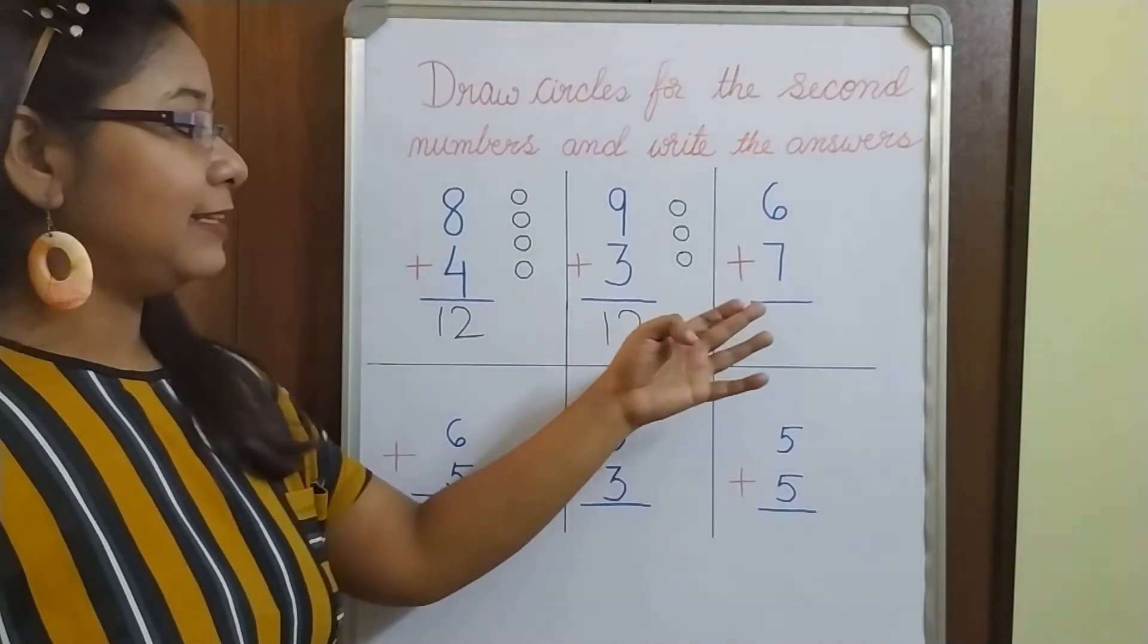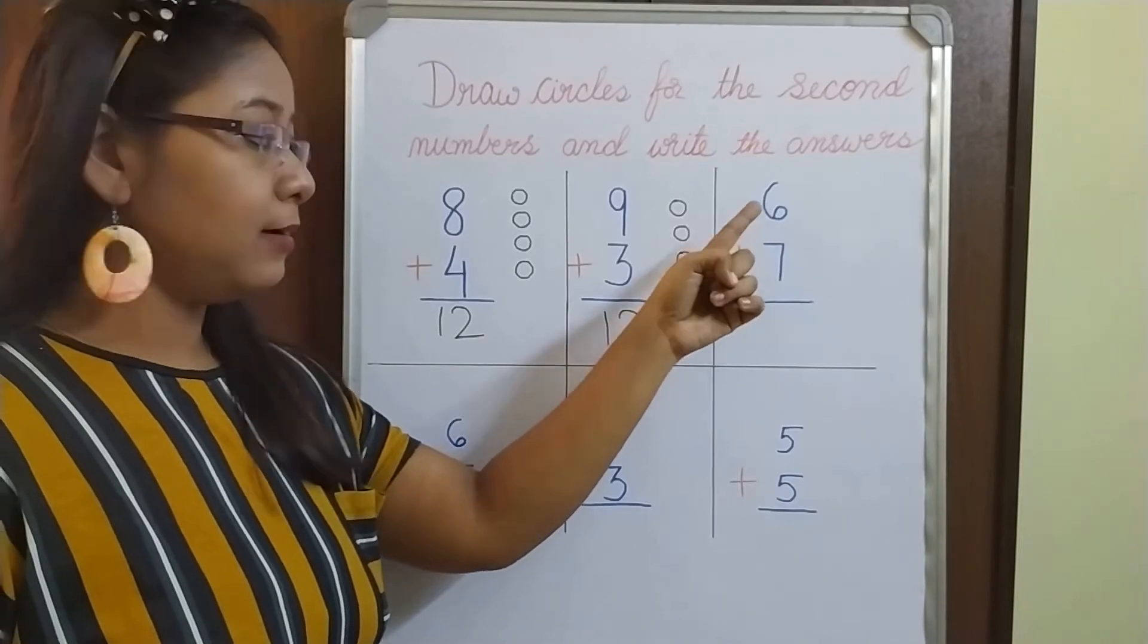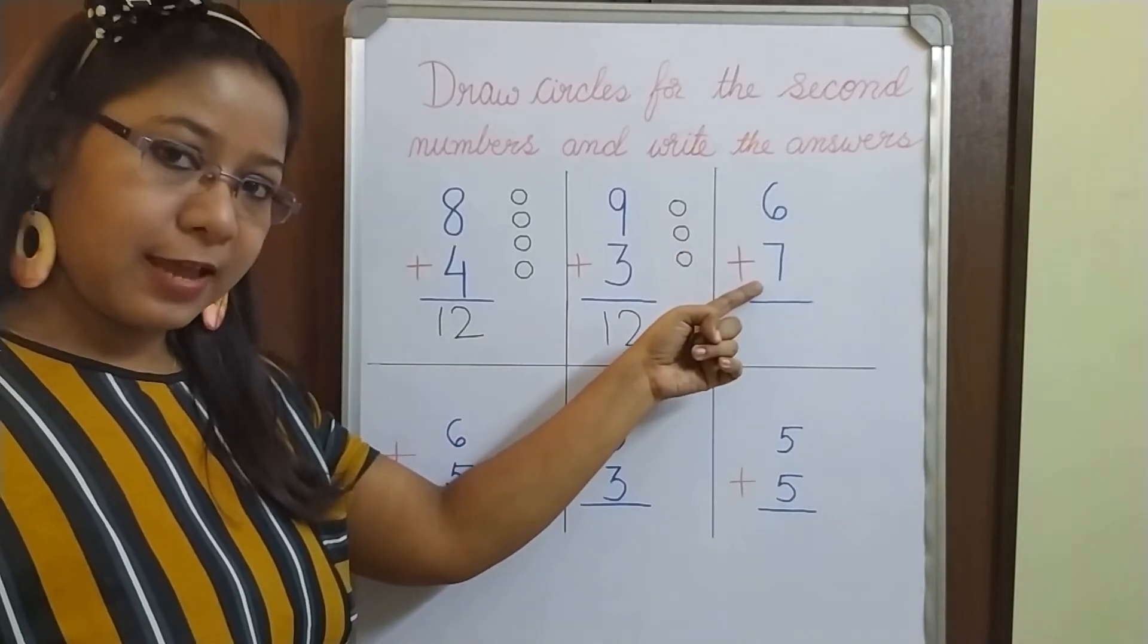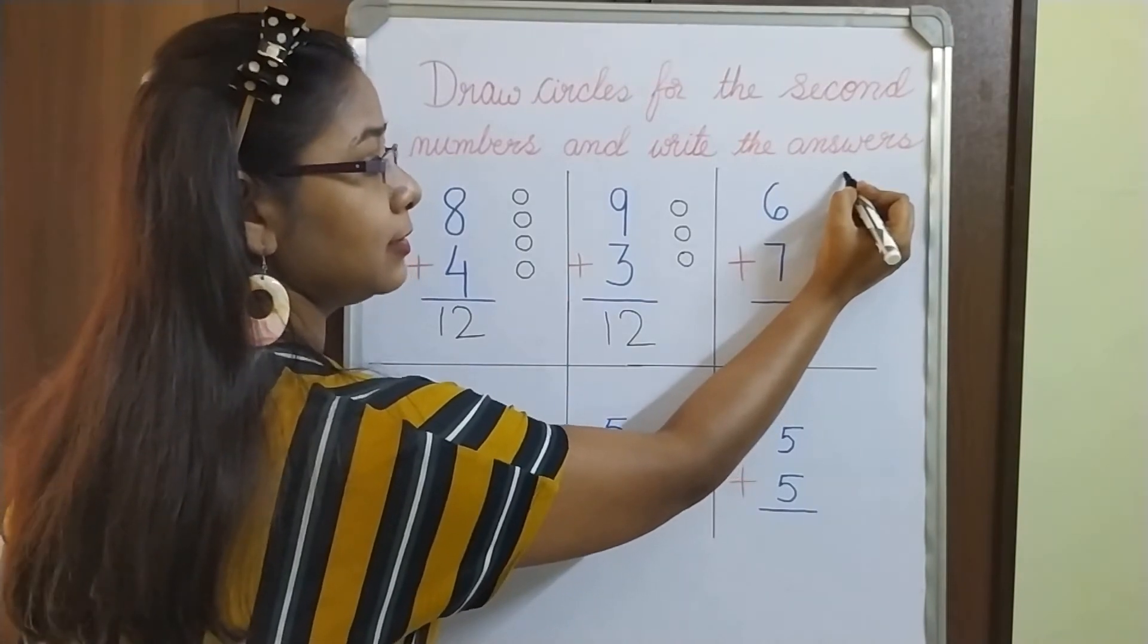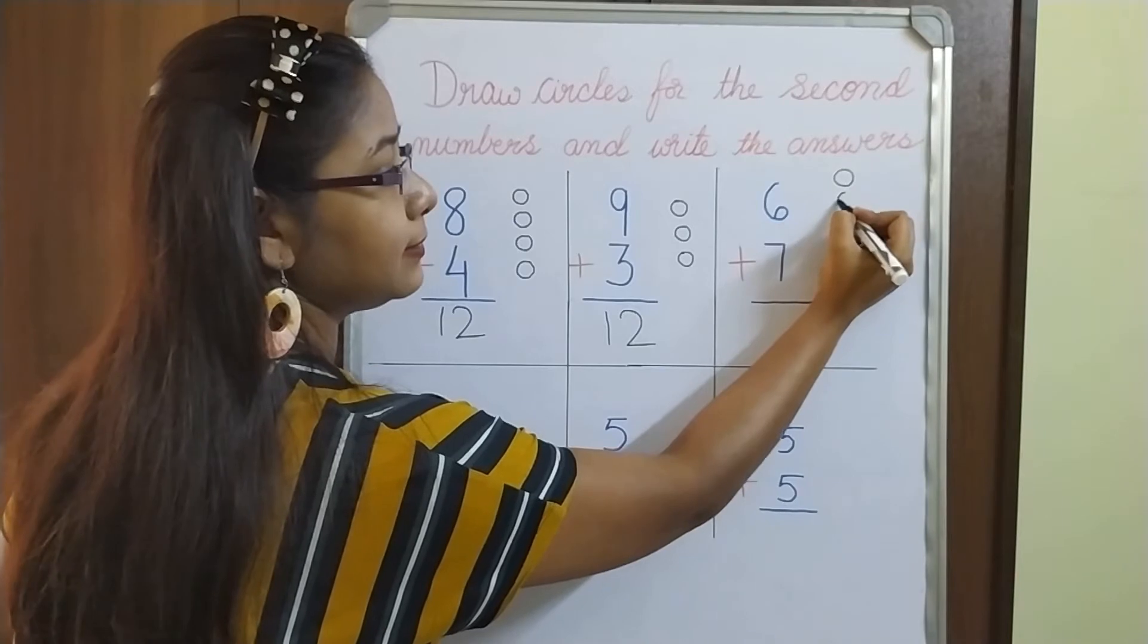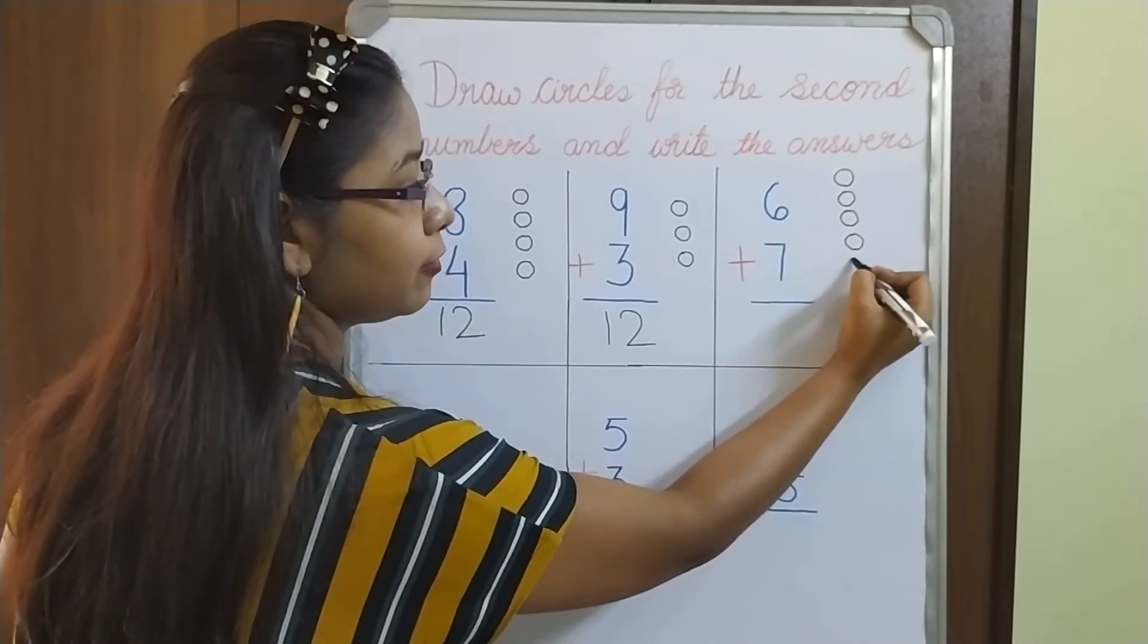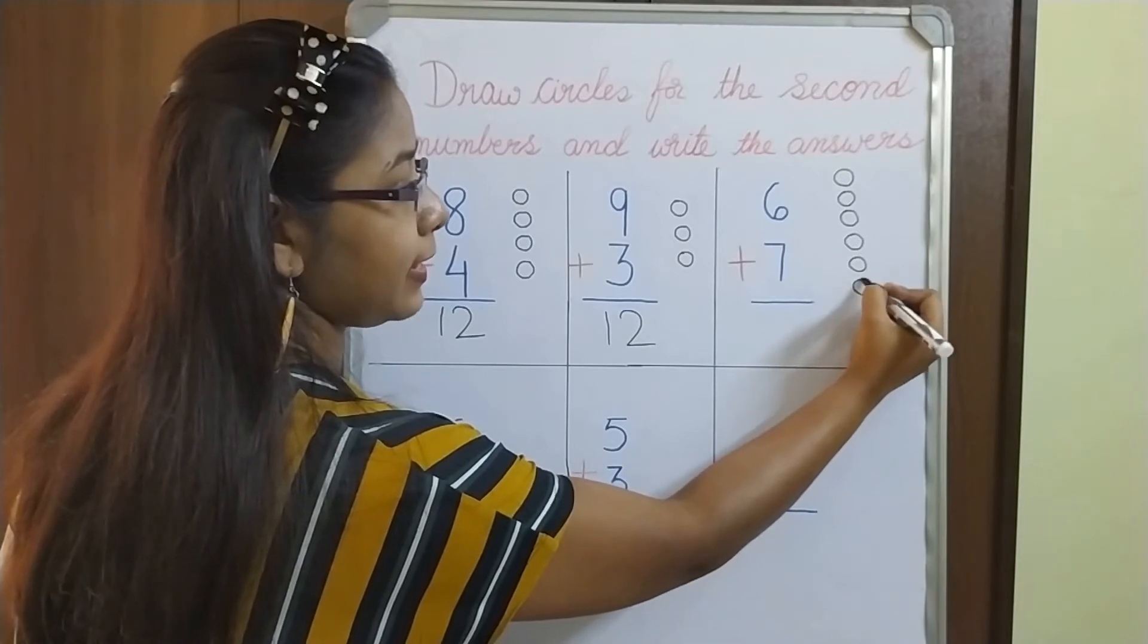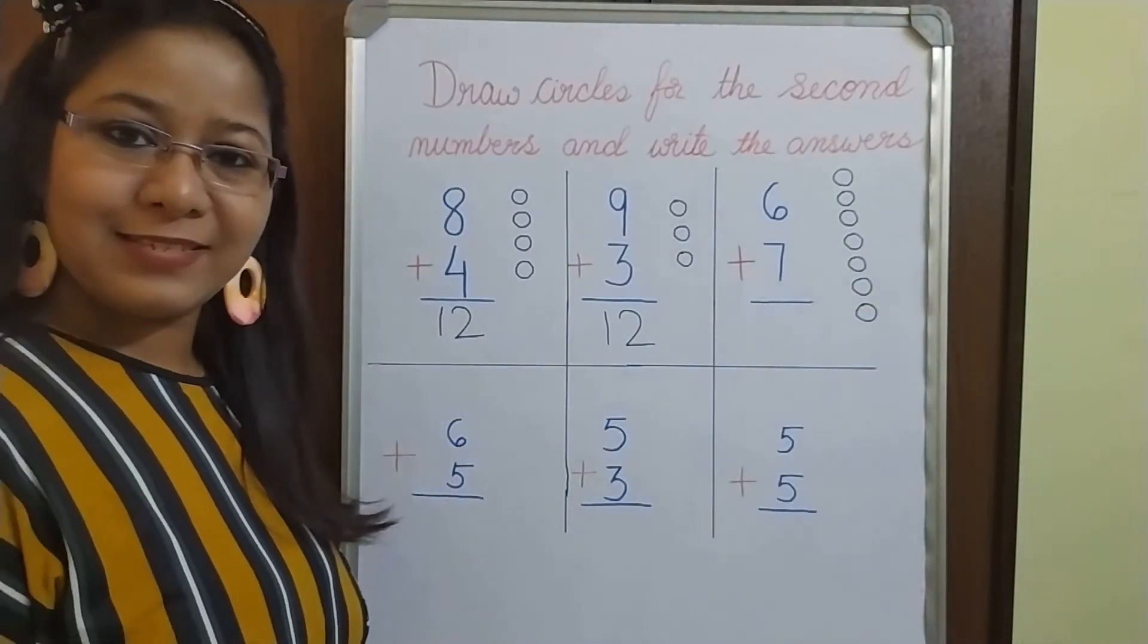And our next one is 6. First number is 6. Second number is 7. So I have to draw 7 circles. Let's draw and count together. 1, 2, 3, 4, 5, 6, 7. I have drawn 7 circles.